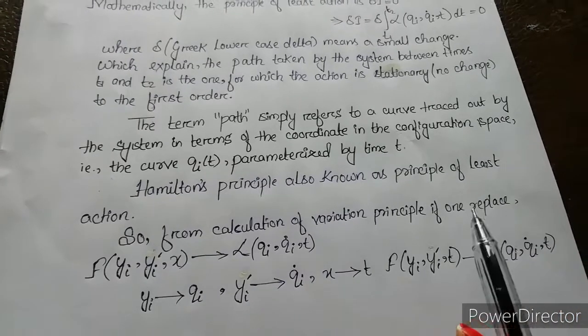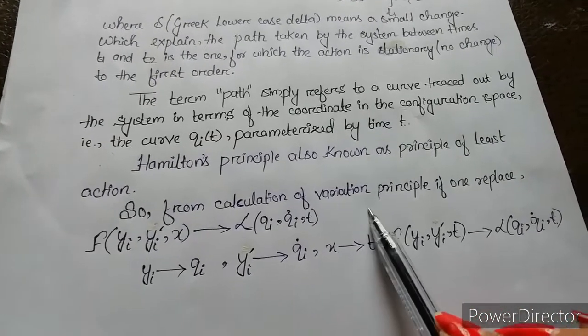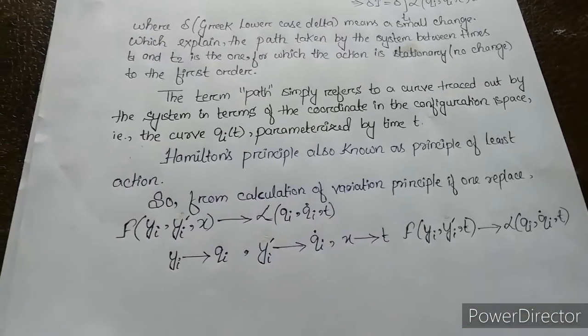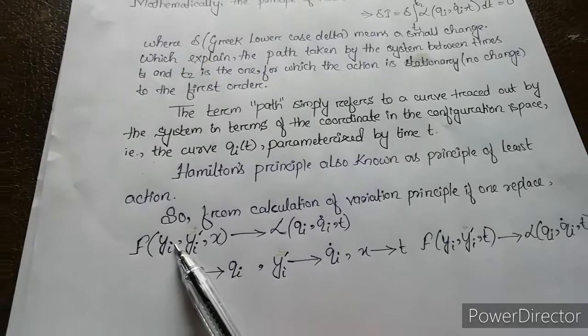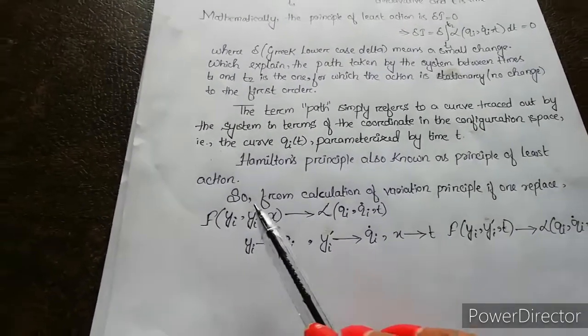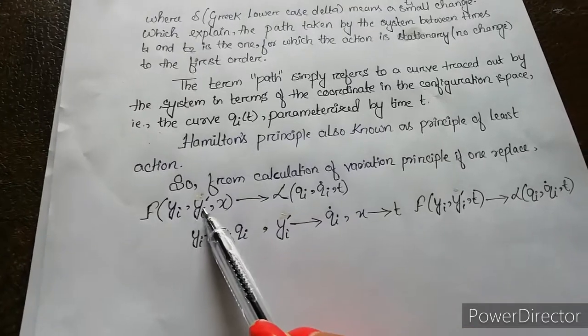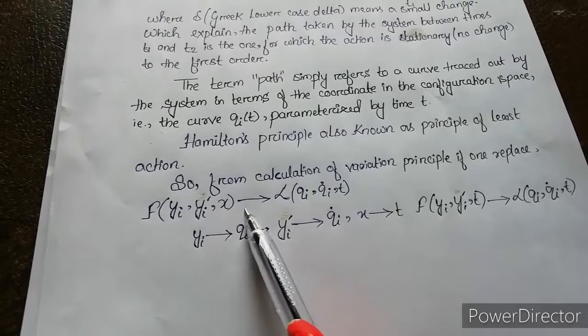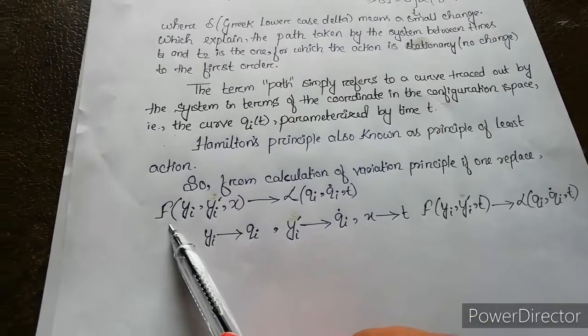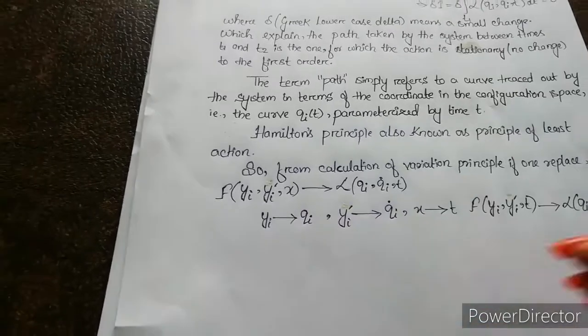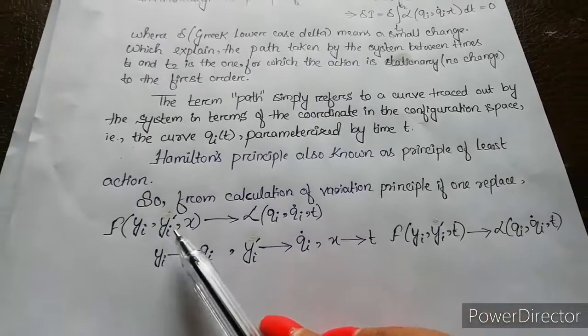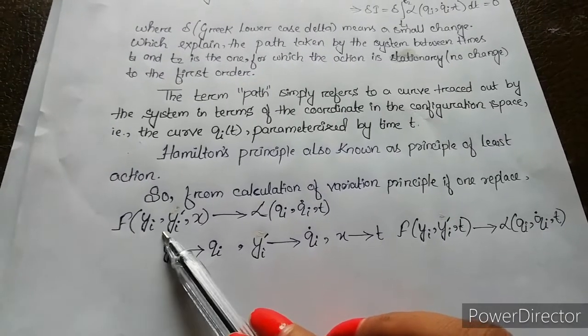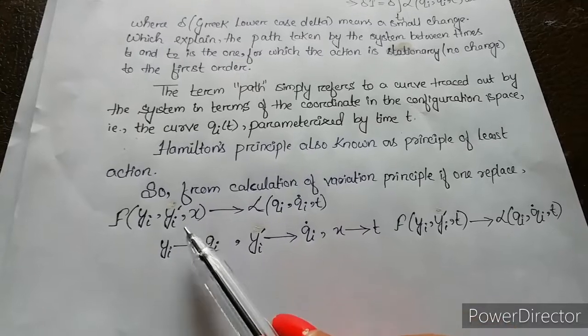Now, from the calculation of the variation principle, we replace the function f, where f is a functional defined as a function of yi, yi prime, and x. Here yi is a function and yi prime is the derivative of this function, that is yi prime equals dyi by dx.